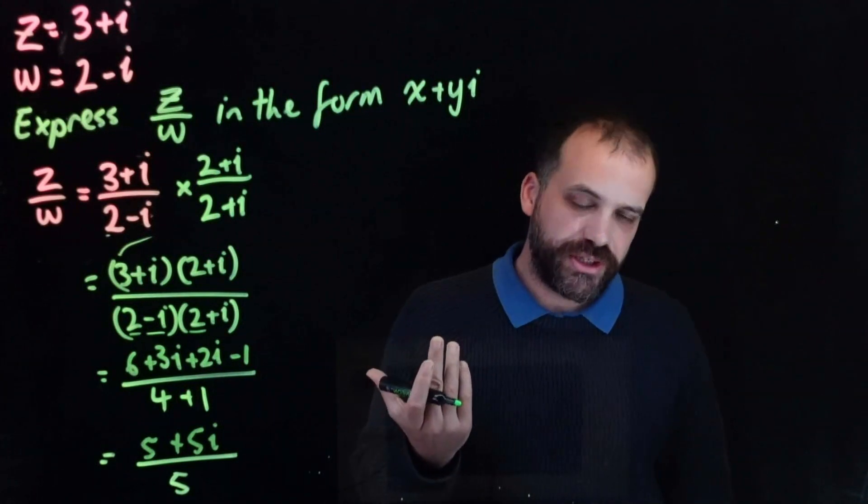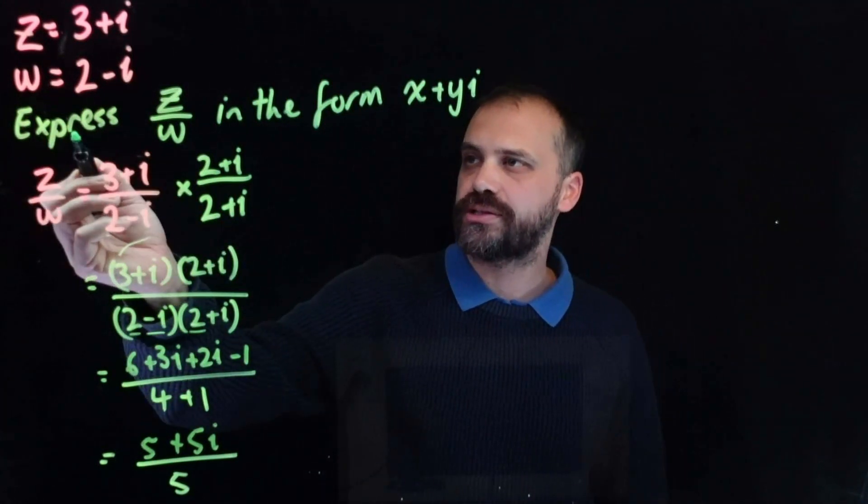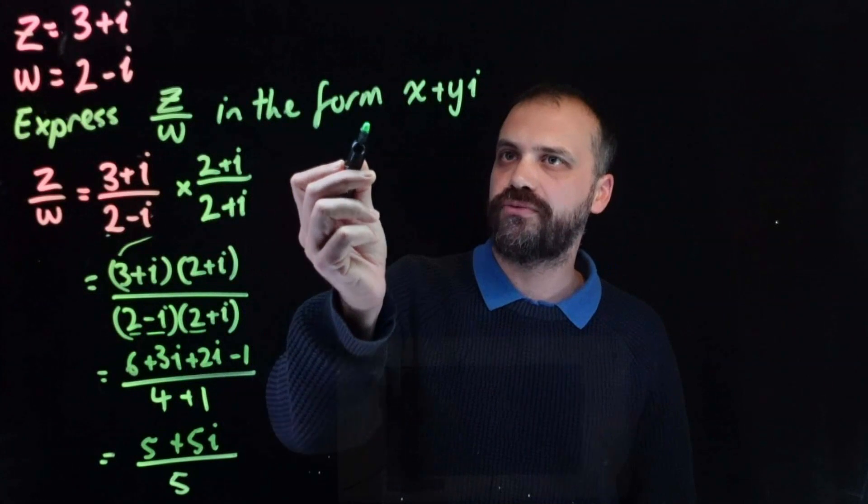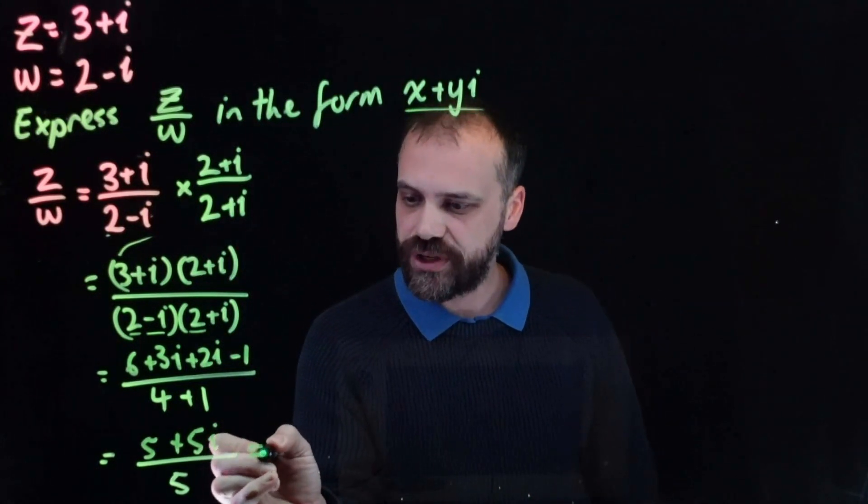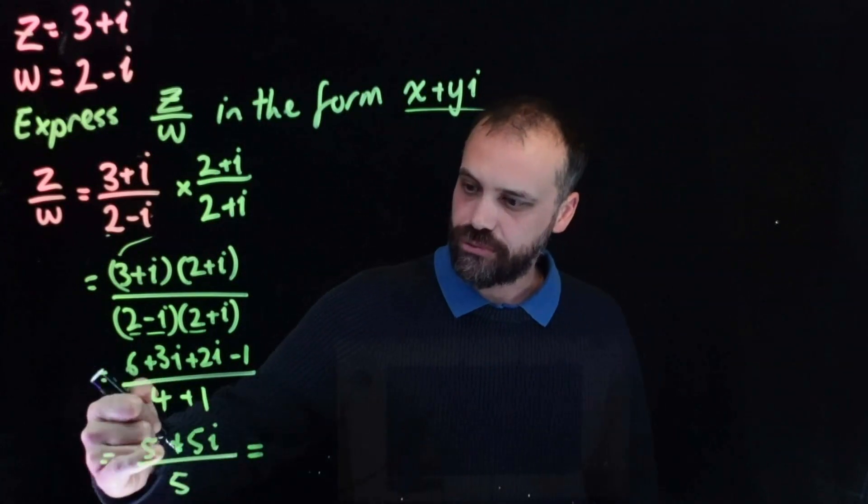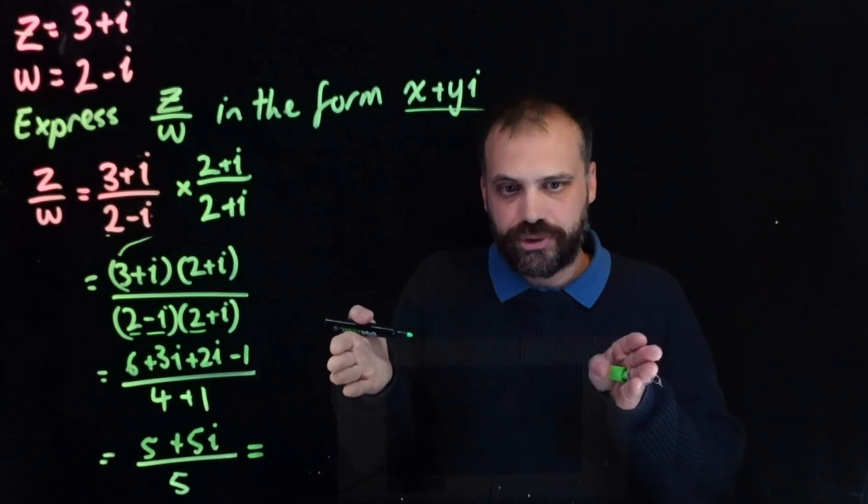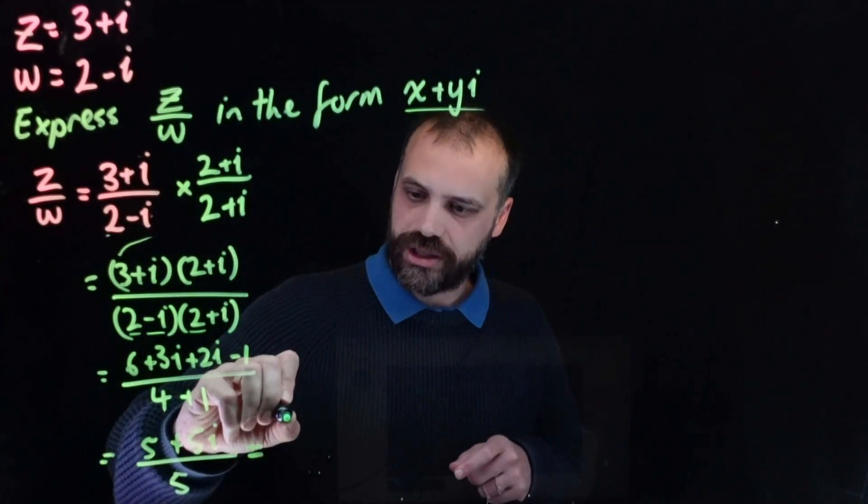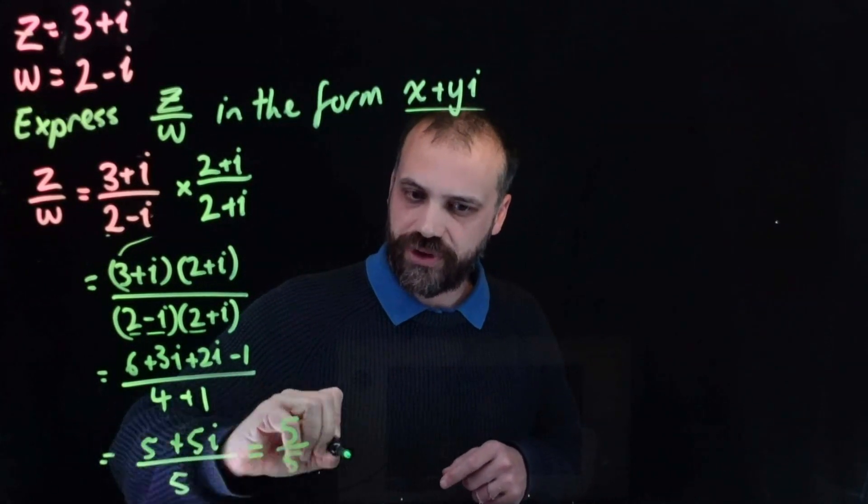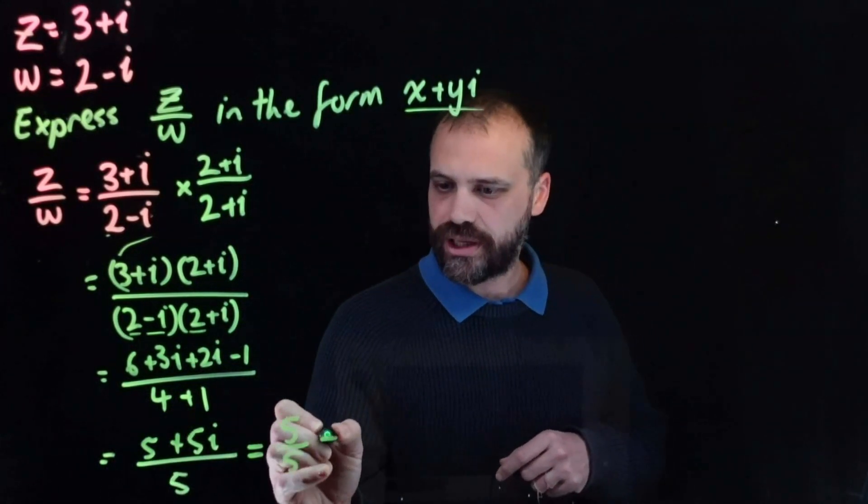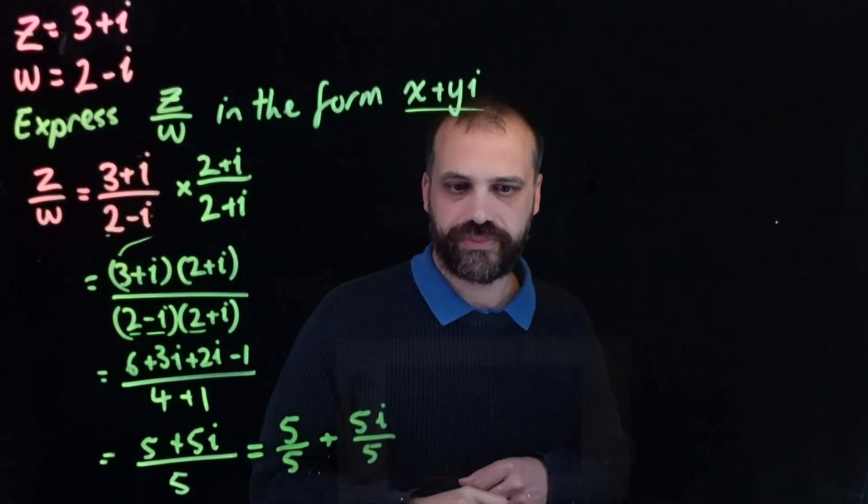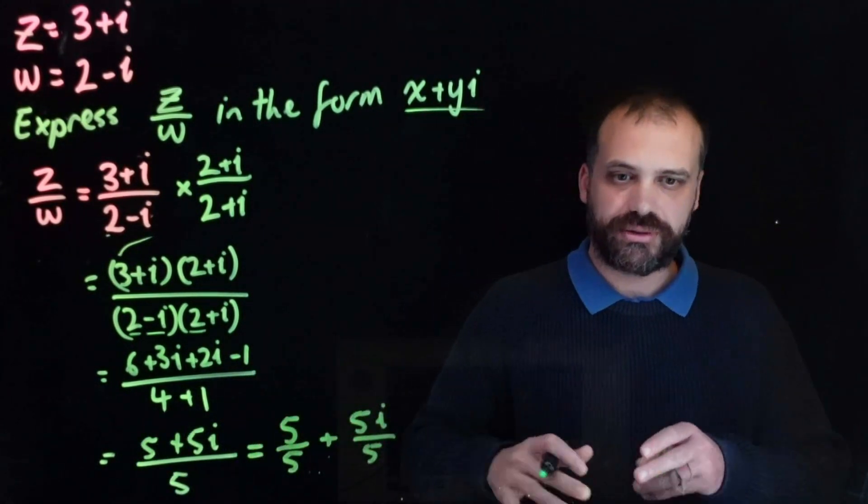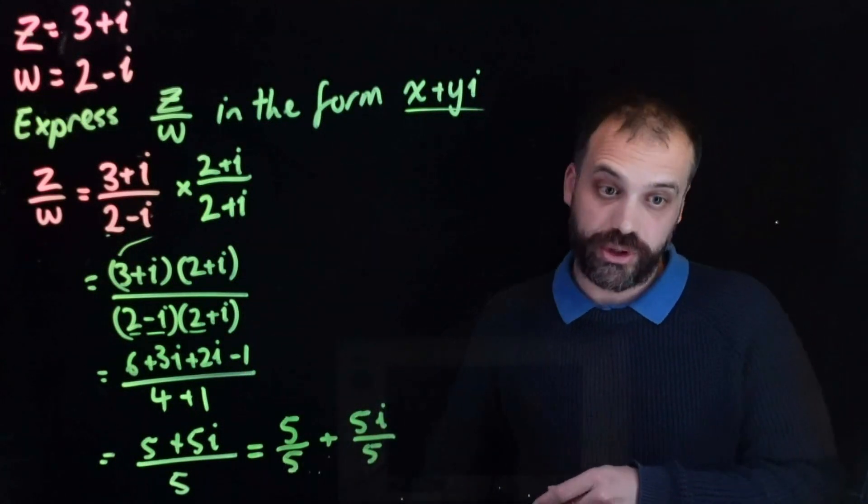It feels like we're finished, but again, the question says express z over w in the form x plus yi. So we just need to finish this off by writing it as two separate terms. So writing it as 5 over 5 plus 5i over 5. I'm working across the thing just because I haven't got space. You should be working down.